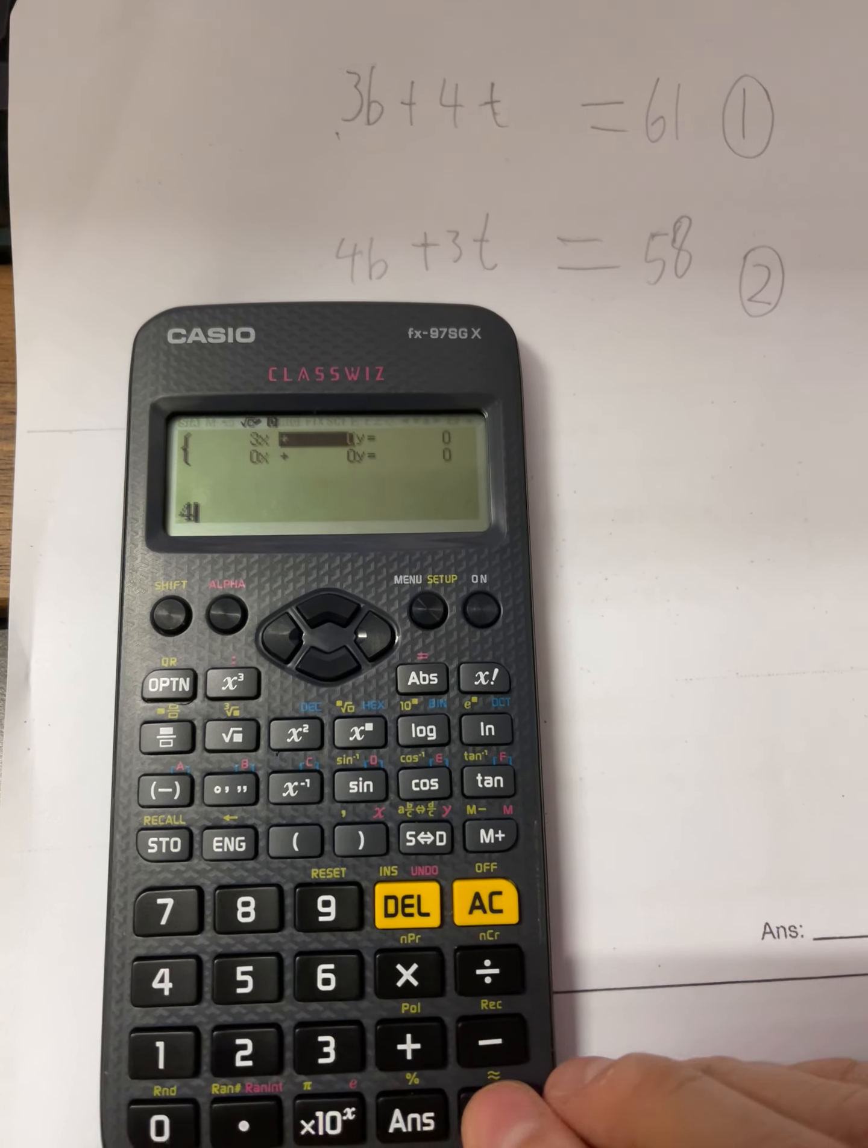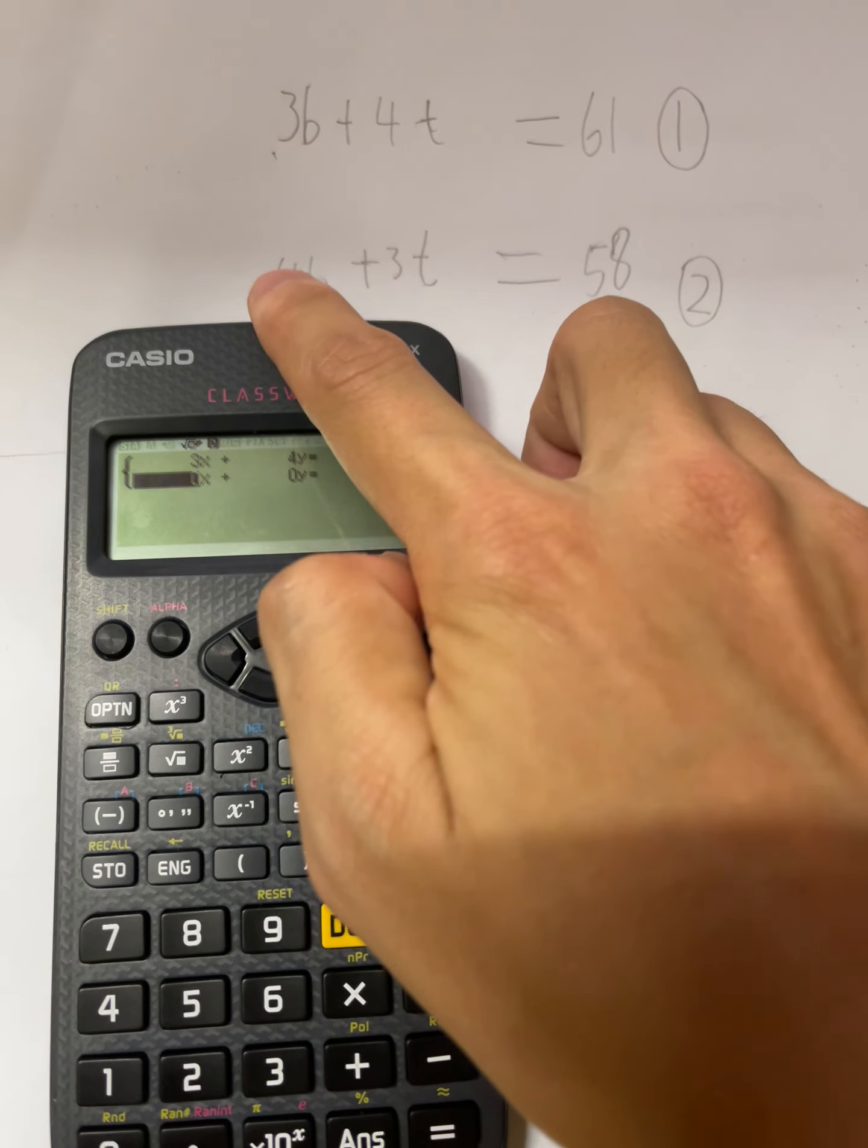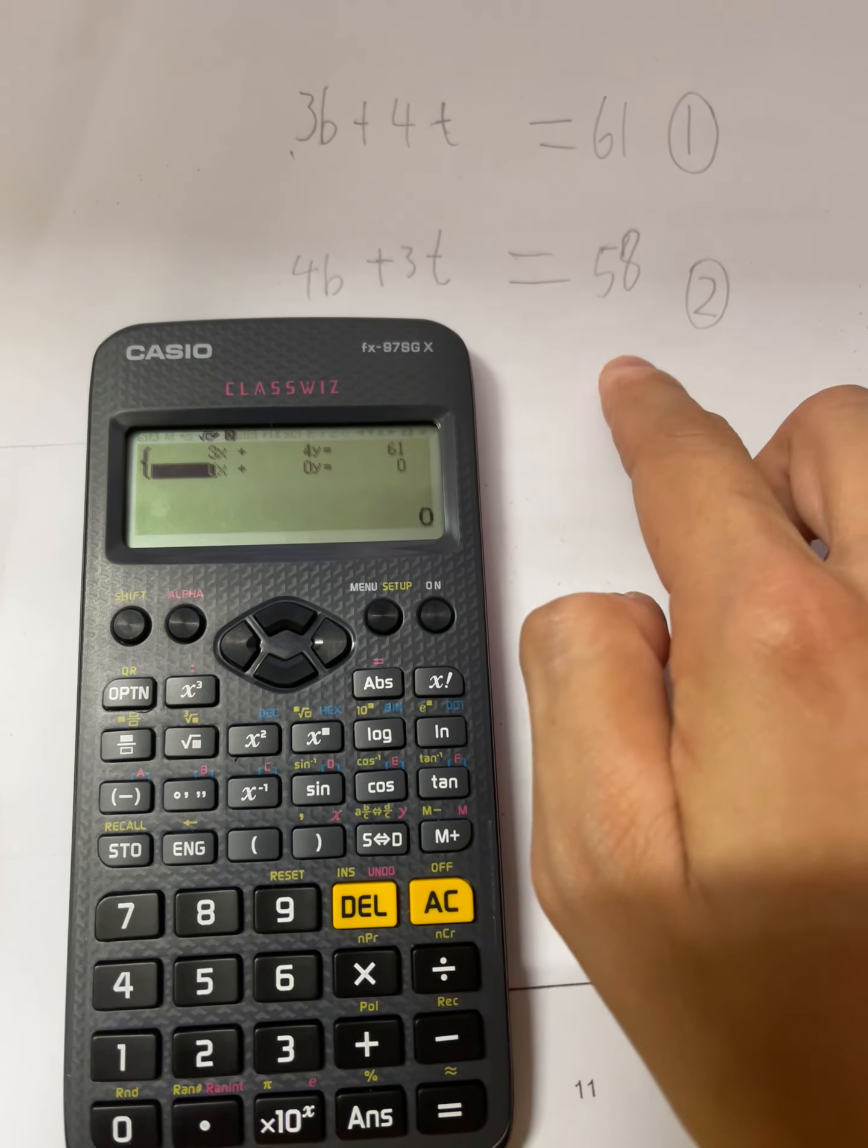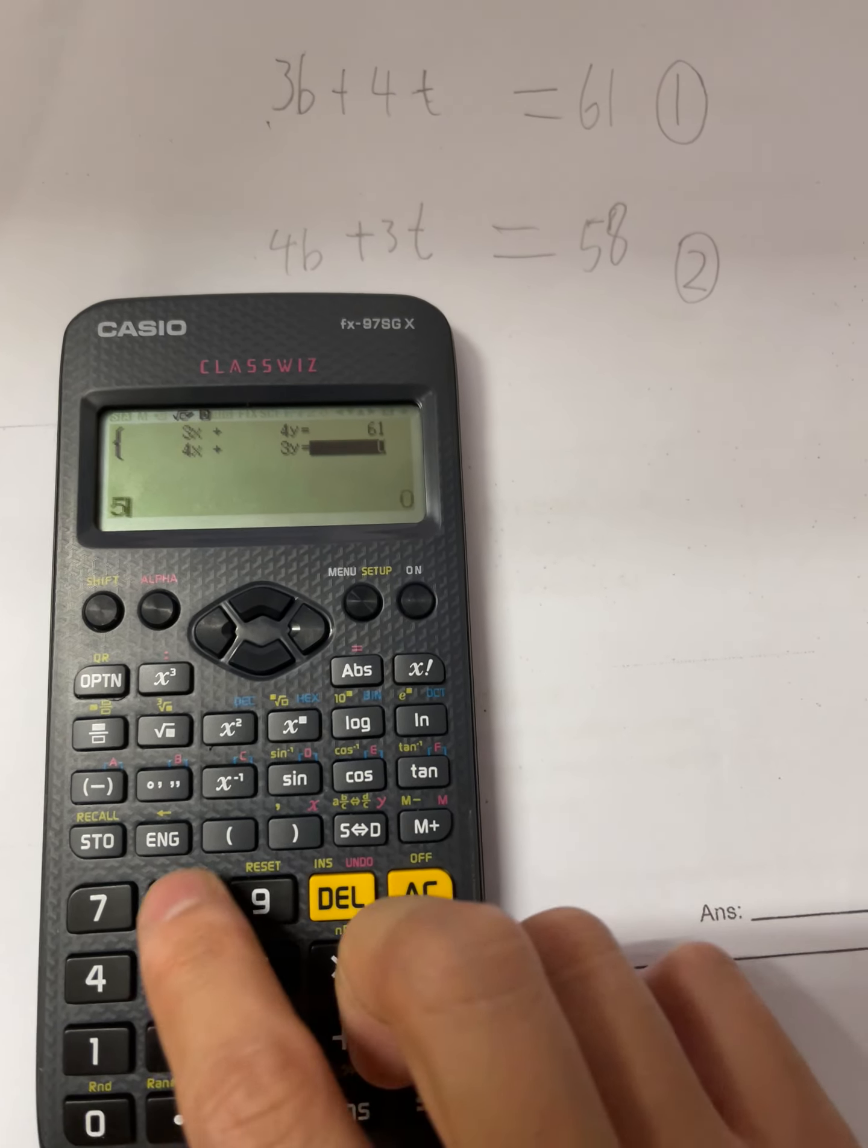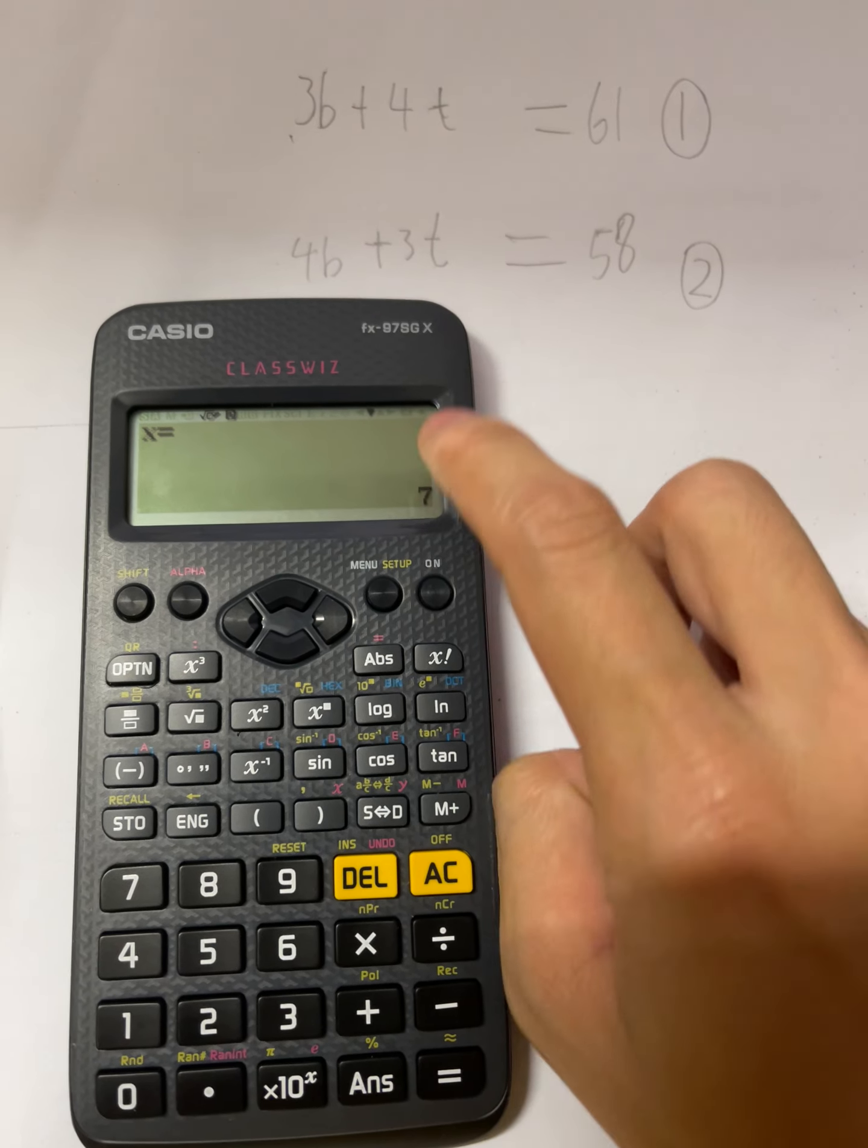The next one is four, enter, 61, enter. So now comes to the second row. The second row is four, three, 58. So it's four, so it's three, and then 58. So you press the equal, so they tell you x...